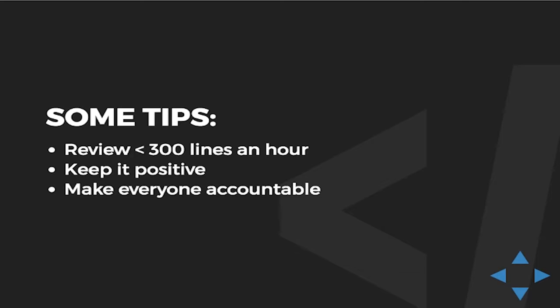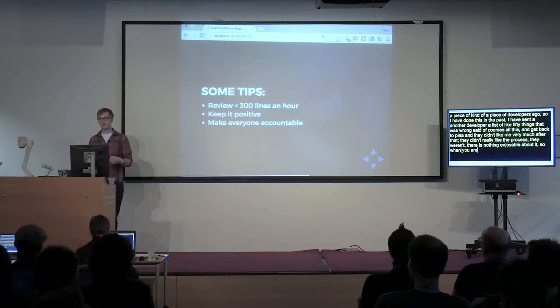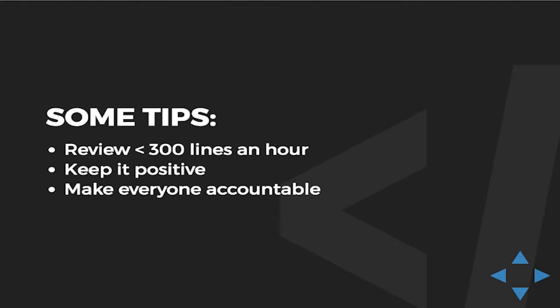Keeping it positive and making everyone accountable is just a piece of developer ego. I've done this in the past — I've sent a developer a list of 50 things that were wrong, said fix all this and get back to me, and they didn't like me very much after that. There's nothing enjoyable about it. So when you're sending these lists and having this discussion, make sure you're praising something as well — not just saying there's all these things wrong, but saying hey, I noticed these few things, this is what we can learn from it, let's fix them and move on. And making everyone accountable — if only two or three people are sending these out, they're not accountable to the process. Making everyone accountable keeps the quality high and makes sure everyone is really involved and happy with that process.